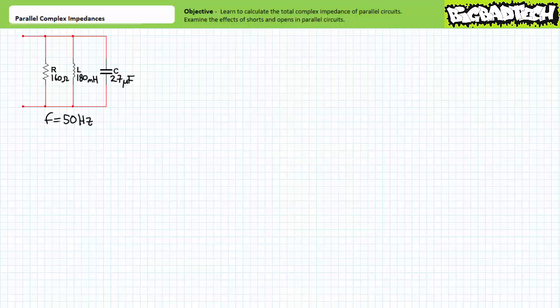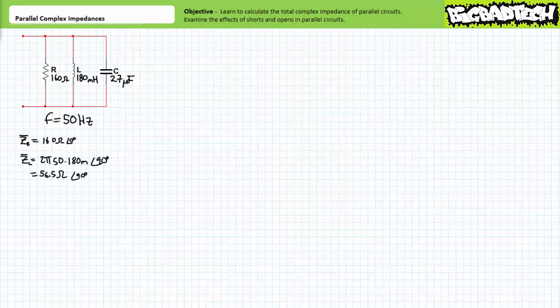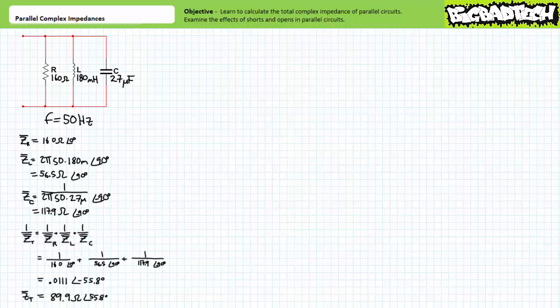In contrast, an open is a path with infinite impedance through which no current can flow — all voltage will be dropped across an open. Let's examine the influence of shorts in parallel circuits first. Consider a parallel relationship of a 160 ohm resistor, a 180 millihenry inductor, and a 27 microfarad capacitor at a frequency of 50 hertz. The resistor is an impedance of 160 ohms at an angle of zero degrees. The inductor is an impedance of 56.5 ohms at an angle of positive 90 degrees. The capacitor is an impedance of 117.9 ohms at an angle of negative 90 degrees. Ordinarily when connected in the following fashion, this parallel relationship would represent a total impedance of roughly 89.9 ohms at an angle of positive 55.8 degrees.